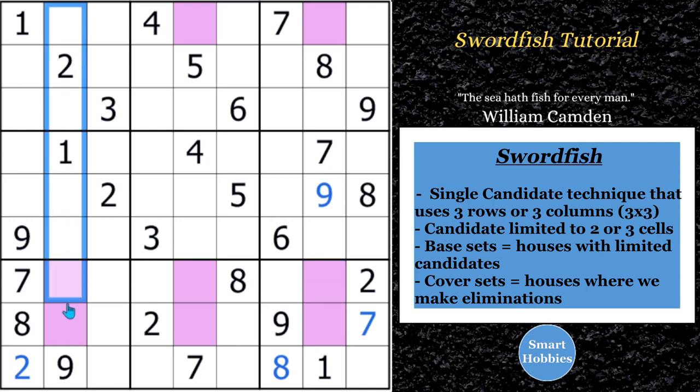Basically, the base sets are where you're limited to the two or three candidates. So that's going to be the columns, two, five, and eight. And then the cover sets are the rows where we can make additional eliminations. So rows one, seven, and eight are your cover sets. And so what works here is that three in row one has to be here, here, and then row seven has to be here, here, here, and row eight, here, here, and here.